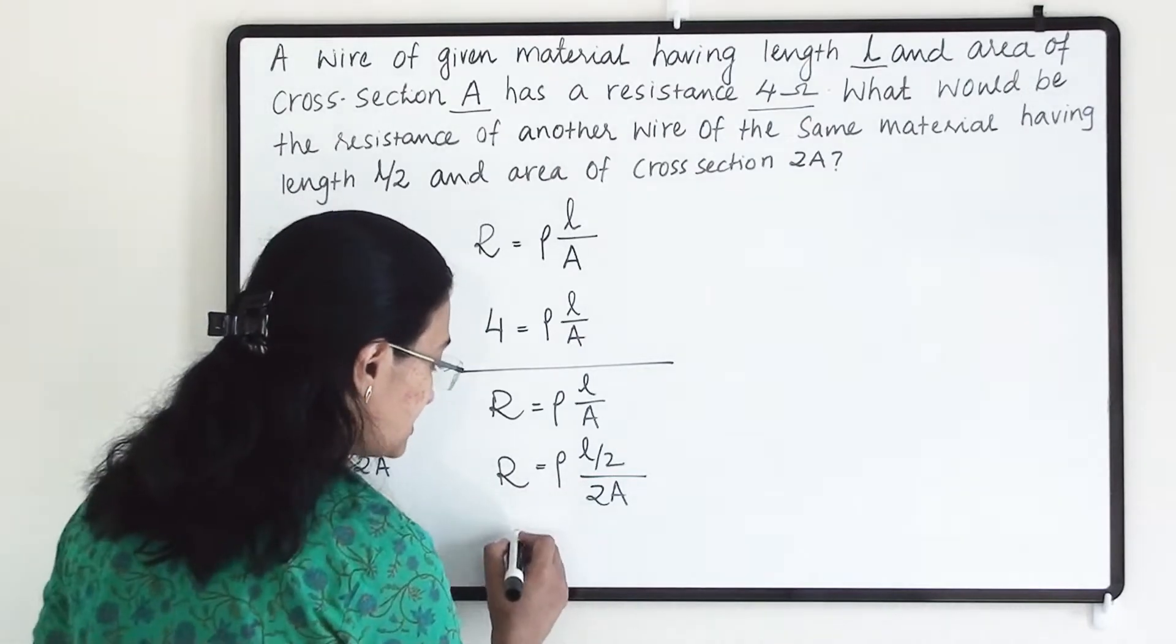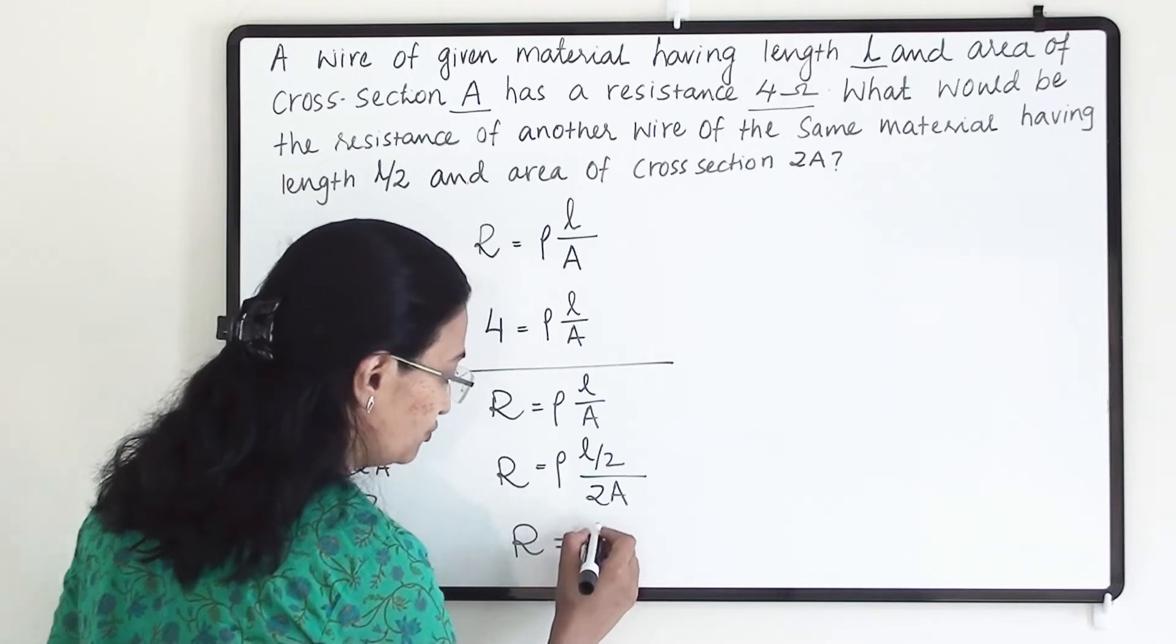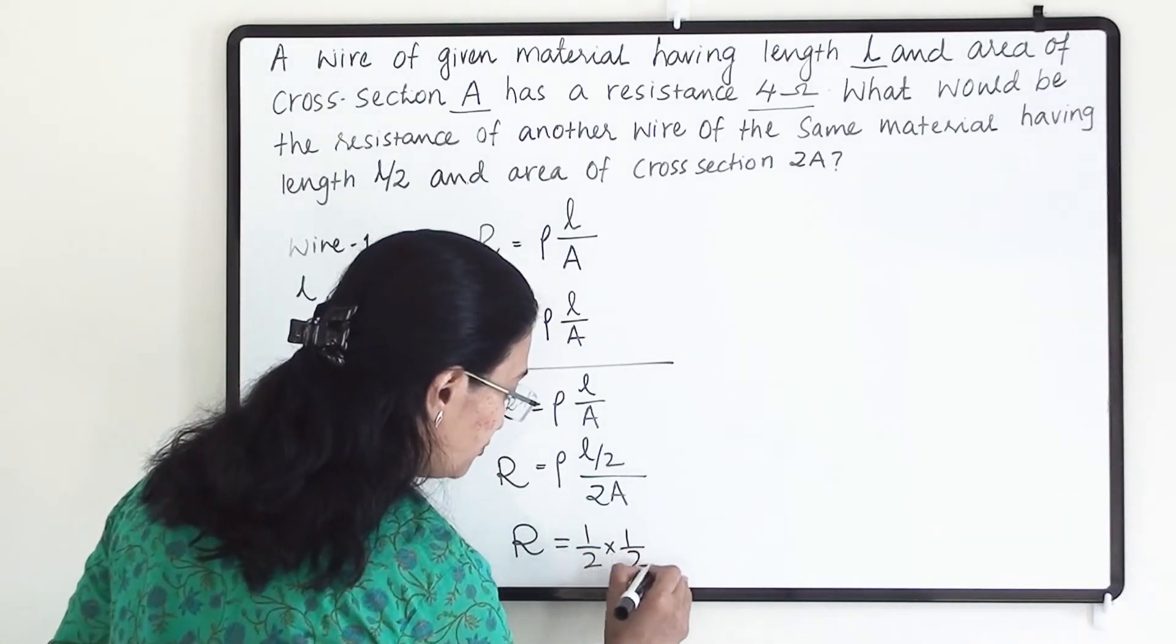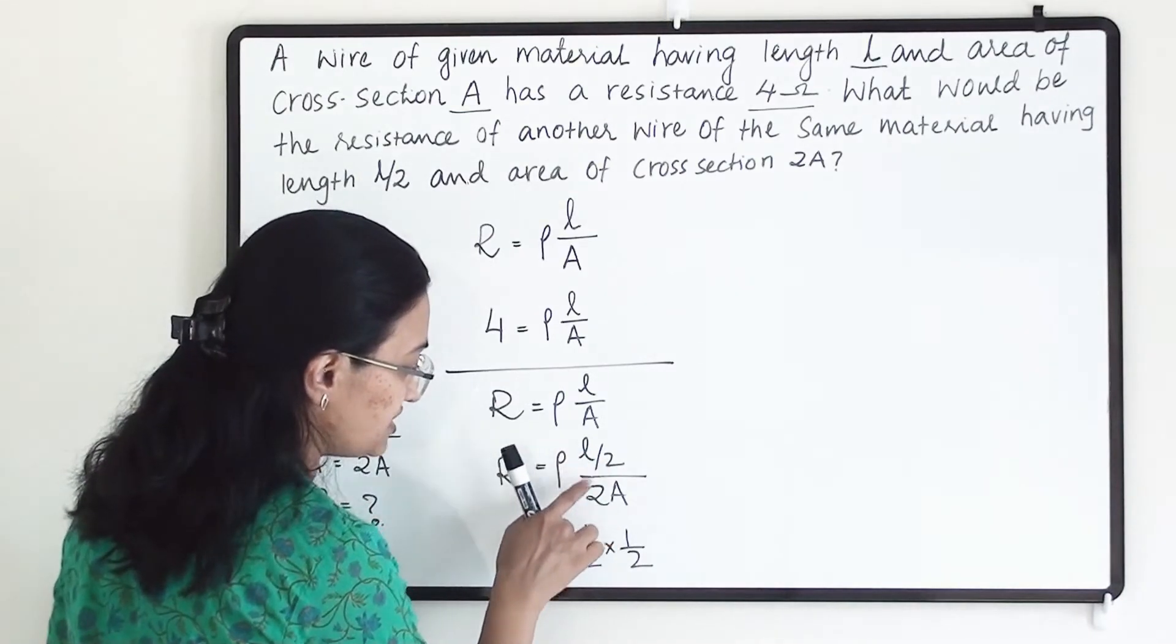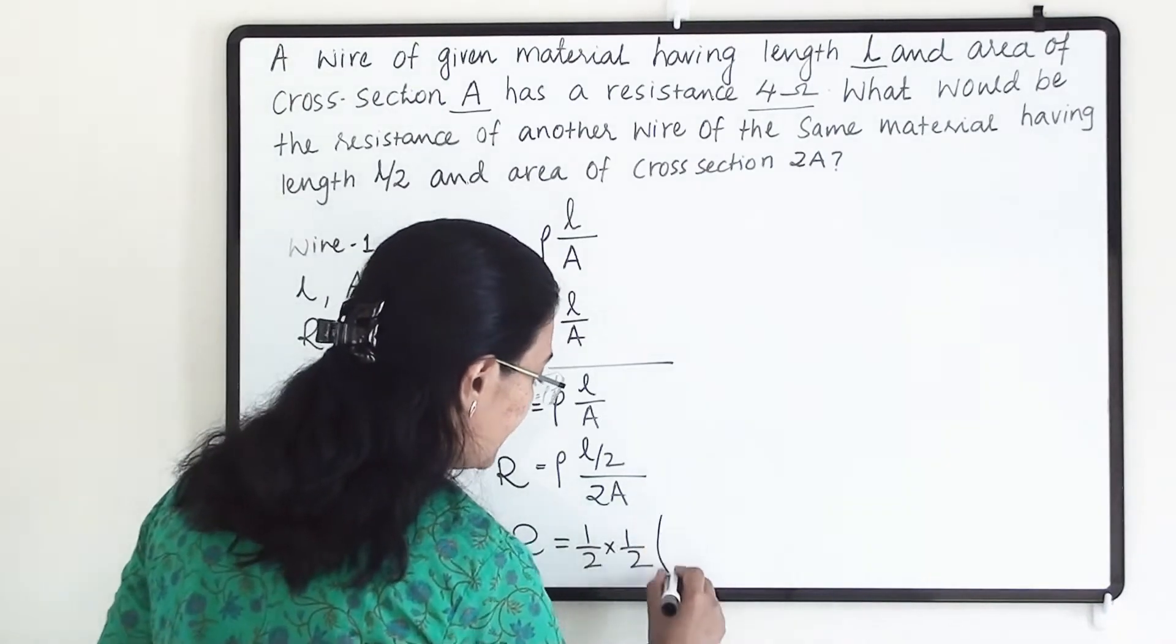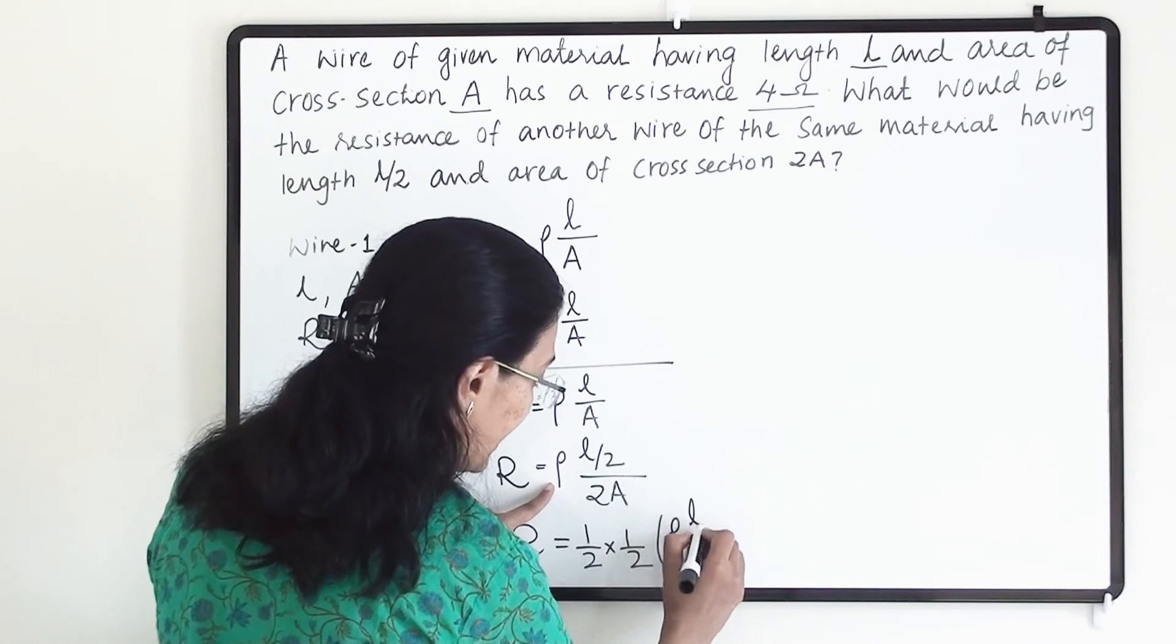If I reframe this equation something like this: R equals 1 by 2 into 1 by 2, because 1 by 2 is for this and 1 by 2 is for this. So 1 divided by 4, and into the bracket I am taking remaining things, rho L by A.